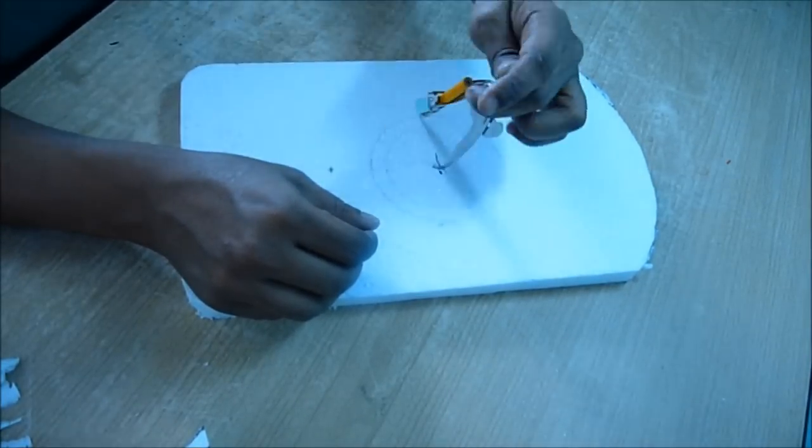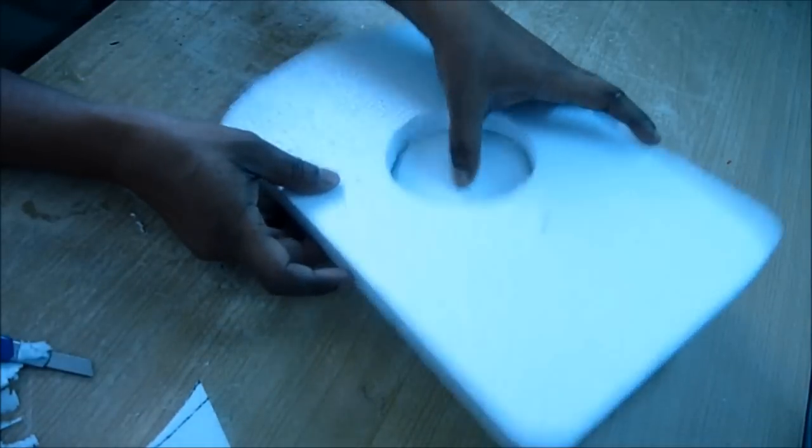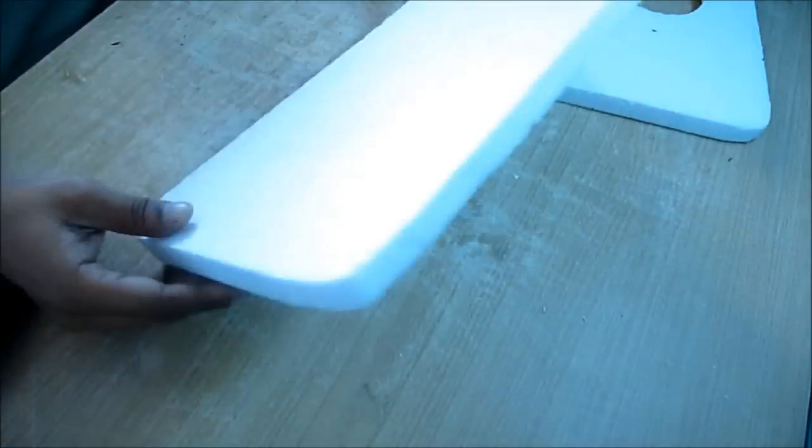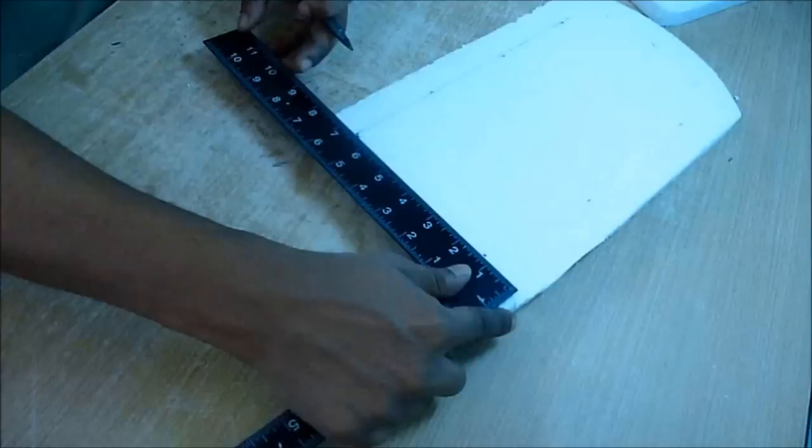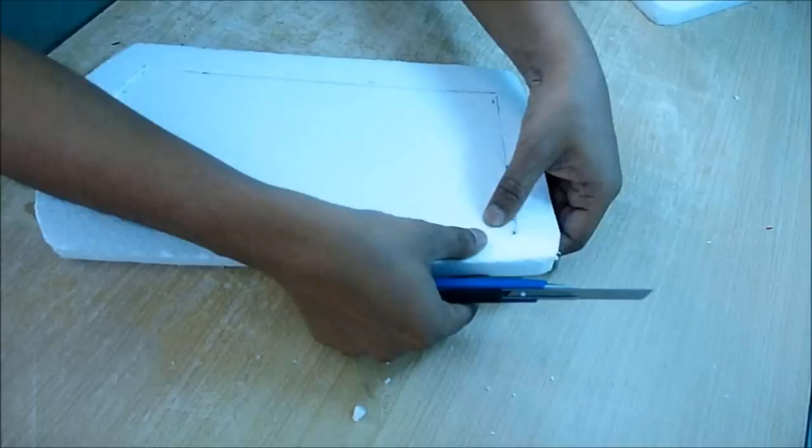Now make another similar shape and size of thermocol piece. Leave around one inch from the side and cut the center out like that. You made a frame.